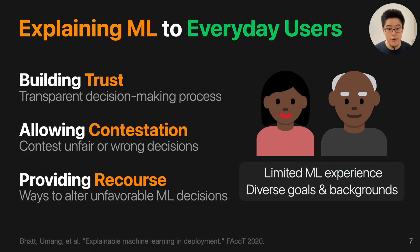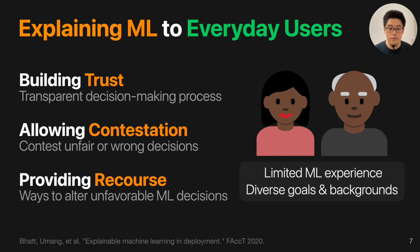Some researchers have categorized different goals when trying to explain ML to everyday users, such as building trust, allowing them to contest unfair or wrong decisions made by machine learning systems, and also to provide recourse. In this talk, I will focus on recourse.